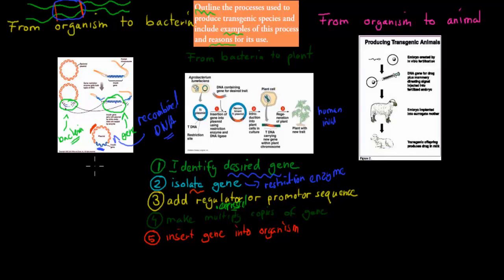So we take that DNA that we want and put small bits on either end to make sure that the new DNA knows it should make copies of this gene. That's what adding regulator or promoter sequences means — adding small bits to that DNA placed into the bacteria, to let the bacteria know that it should activate that gene and make that protein.